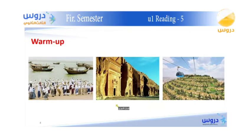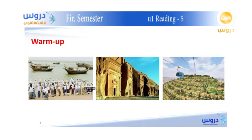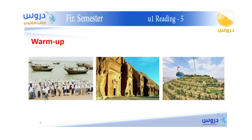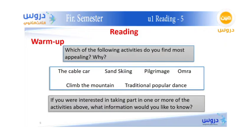Here we go with three different pictures. Do you have any idea or information about any of these pictures? It's all in Saudi Arabia, all in KSA. You can guess the provinces if not the specific cities. These mountains are famous in the south, and this one is in the east and west coast, and this is in the north of KSA.